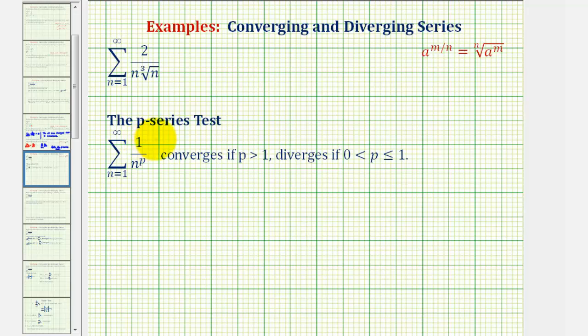To review, the p-series test tells us that the infinite series in this form converges if p is greater than 1, and diverges if p is greater than 0 and less than or equal to 1.